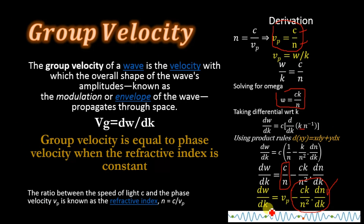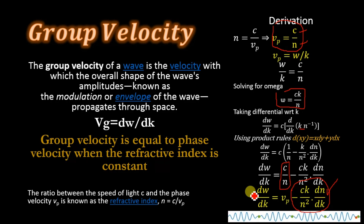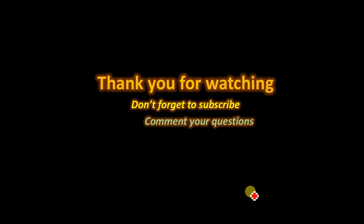The group velocity can never surpass the speed of light, but phase velocity can. Since we need group velocity to transfer information from one place to another, that is why the speed of information transfer is limited by the speed of light. Thank you for watching — don't forget to subscribe and comment your questions.